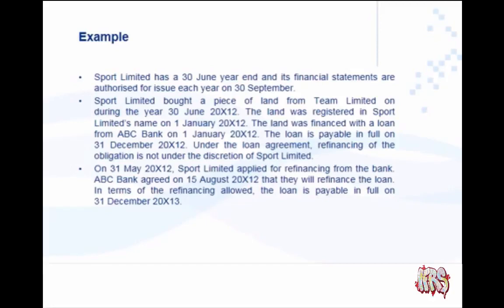The loan is payable in full on 31 December 2012. With a 30 June year end, we need to pay this loan in full on 31 December 2012 — that's within the next six months, so within 12 months. Therefore, it is a current liability. But we have to read further if there's anything else the question tells us.